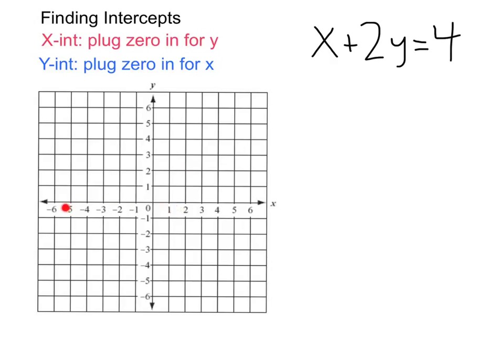If we have negative five zero, negative three zero, zero zero, one zero, four zero, six zero, any point on the x-axis always has a y-coordinate of zero. So to find the x-intercept, we want to plug zero in for y.